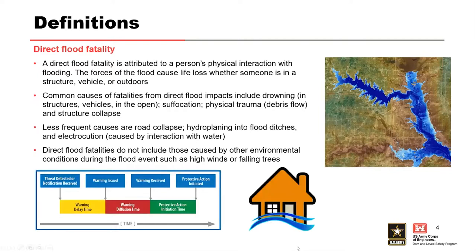Quickly, definitions. A direct flood fatality is what we are estimating in LifeSim — it is attributed to a person's physical interaction with flooding. Common causes include drowning in structures and vehicles, out in the open, suffocation or physical trauma, whether from getting crushed by debris or structure collapse. Some less frequent causes include roadways giving out with water flowing over them so they can't be seen — it looks shallow, people try to drive through, their car sinks, they drown.